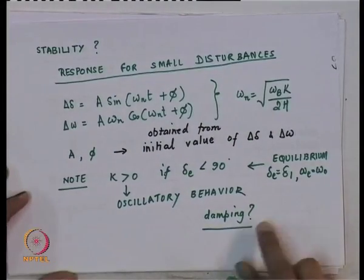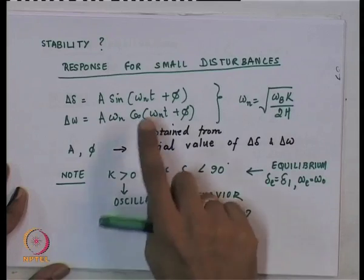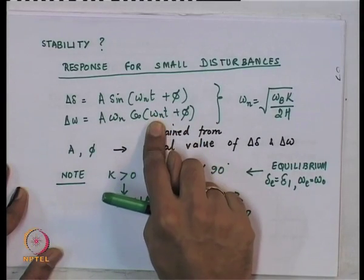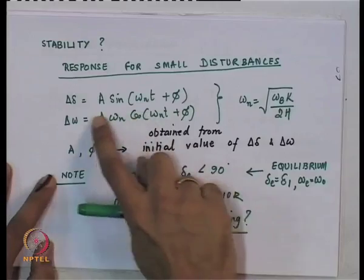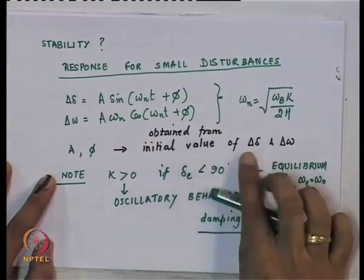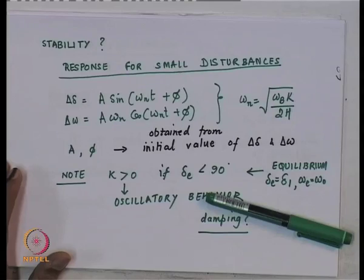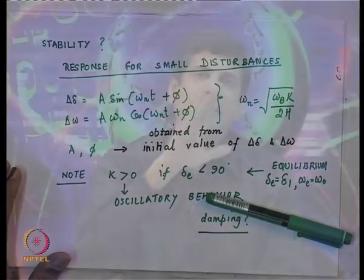A point which may occur to you: would you call this oscillatory behavior stable or unstable? If the system just continues to oscillate around the equilibrium without coming back, we would call it a marginally stable system. It is not coming back to the equilibrium, nor is it growing away from the equilibrium with time.